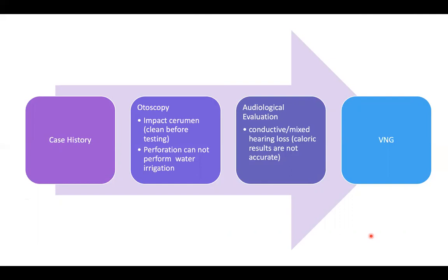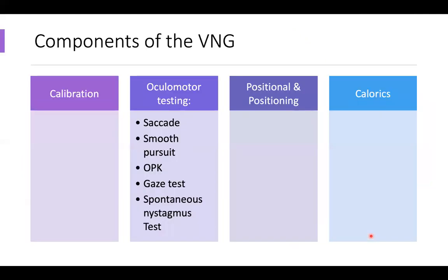Anything within the last week or so for the audiogram would be enough. Sometimes if it's a well-known case, the audiogram is already on file and I don't ask the patient to repeat it. Now we're going to go into the VNG itself. Within the VNG we have the calibration component, oculomotor testing — which includes saccades, smooth pursuit, OPK, gaze test, and spontaneous nystagmus test — as well as positional and positioning tests, and finally the calorics.